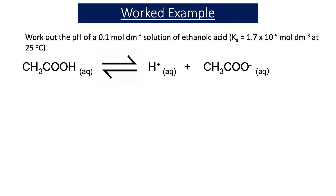So now we're going to look at how we work out the pH of a weak acid solution with a worked example. In the example calculation, we have a concentration of ethanoic acid of 0.1 mol per dm³, and a Ka value of 1.7 times 10 to the minus 5 at 25 degrees C. We're asked to work out the pH of this solution of ethanoic acid, and this calculation is very similar to the equilibrium calculations undertaken in previous videos.